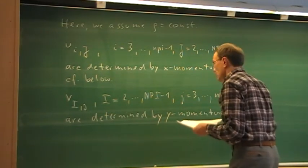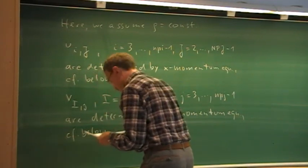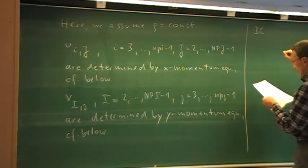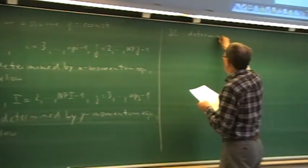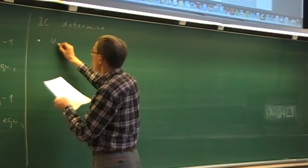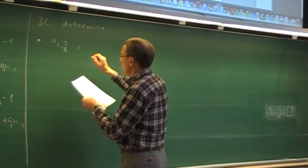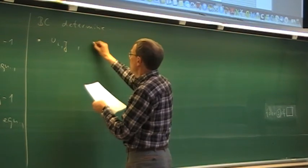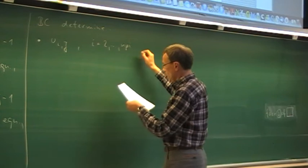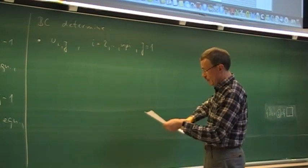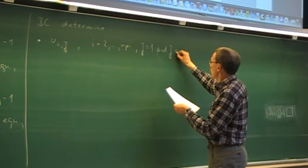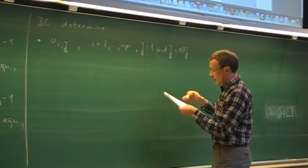These velocity components in the y-direction are determined by the y-momentum equation. That is also what we shall see later. The boundary conditions determine the following velocity components. The boundary conditions — at u_ij, for i equal to 2 to nPi — that is for the lower boundary, the bottom boundary, and for the upper boundary, the top boundary.